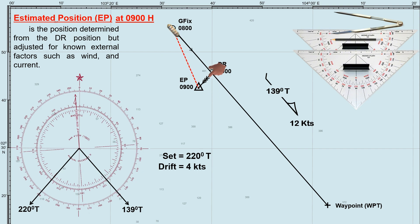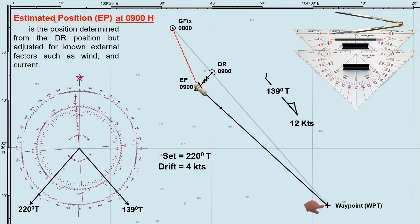Estimated position is more accurate than DR because it accounts for known external factors, but it is still less precise compared to GPS and radar fixes. Now, if this is our next waypoint, we'll need to adjust our course to steer towards it. However, simply setting a new course doesn't guarantee we'll reach our destination accurately. Continuous monitoring of the ship's position at regular intervals is crucial to ensure timely adjustments, especially to account for the effects of set and drift. I've already made a separate video covering how to determine a course to steer considering these factors — please check the link in the description for the full details.